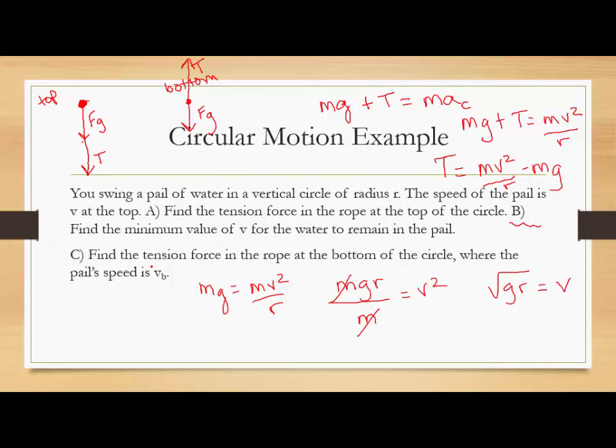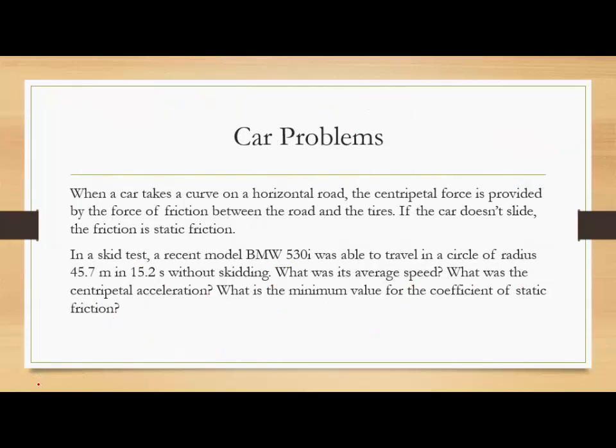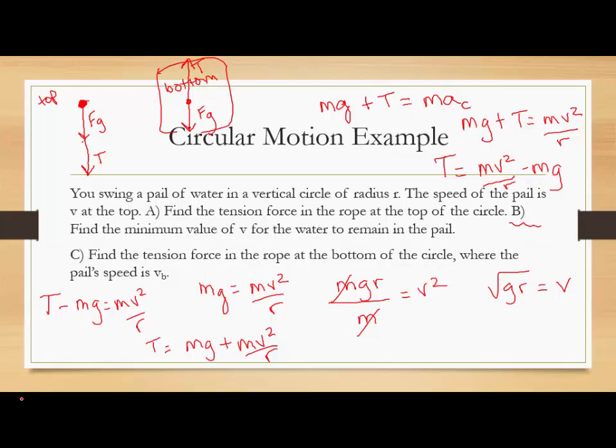And then for part c, tension force at the bottom. Well, at the bottom, this is our free body. So we have tension minus the weight that gives us our centripetal force, and then our tension would be those two added together instead of subtracted like they were over here. Okay, I think I'm going to save the rest of this video for the next time. We will just focus on centripetal force and friction when I see you guys on Monday.